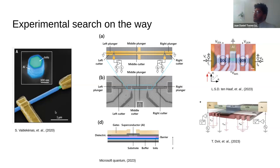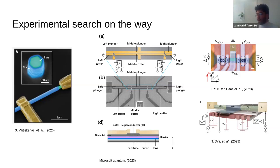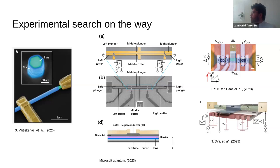Nanowires are not the only platform — there are also two-dimensional electron gases. In a 2DEG, you have a plane of electrons living in two dimensions. On top of this plane you can deposit multiple gates that define the potential, confine electrons in one-dimensional structures, and deposit superconductors such as aluminum. This allows creation of complex shapes, however there has been no success in finding Majoranas so far. There are also other alternatives, for example Kitaev-type chains that try to reproduce topological Majoranas in minimal systems of a few quantum dots.